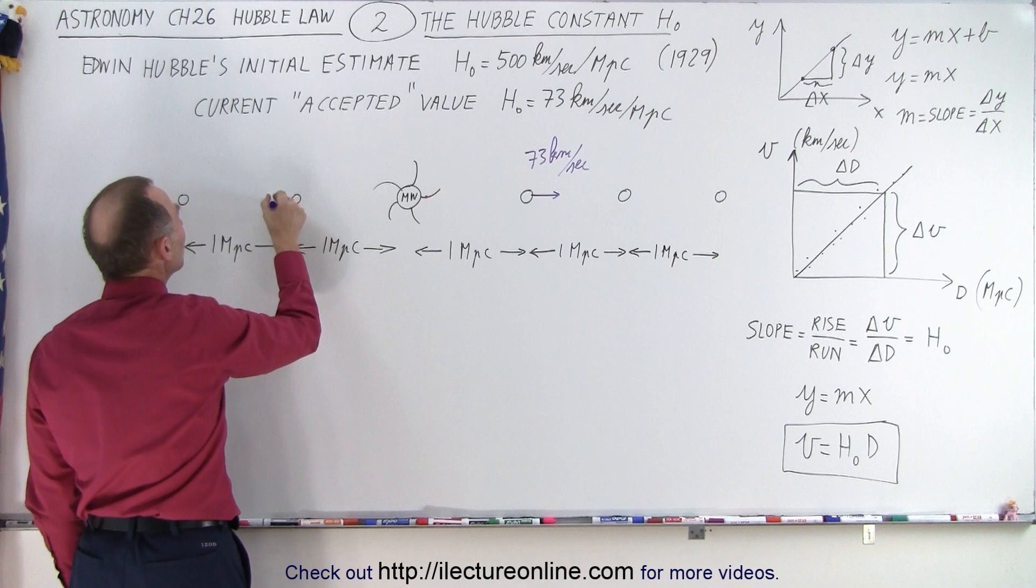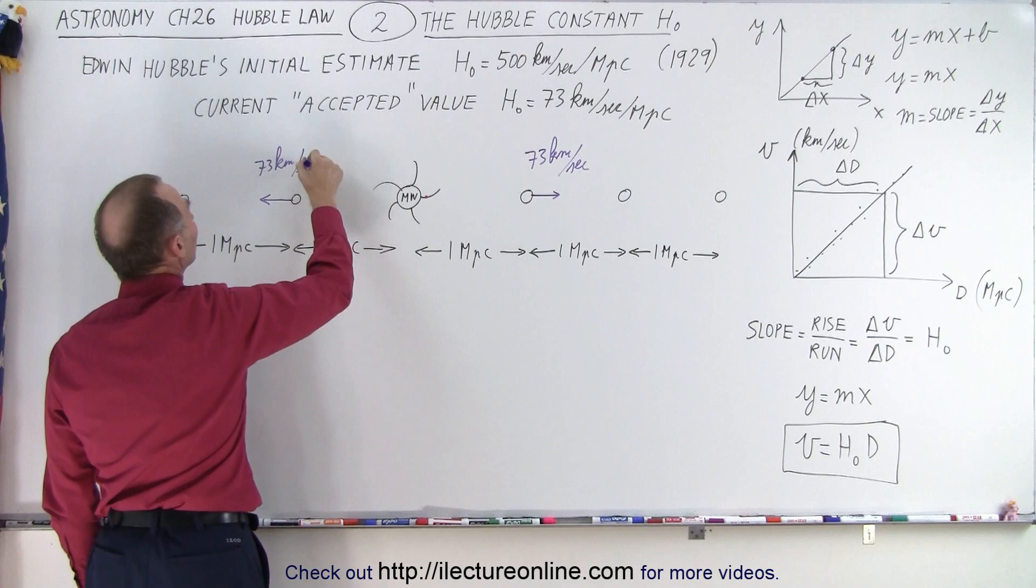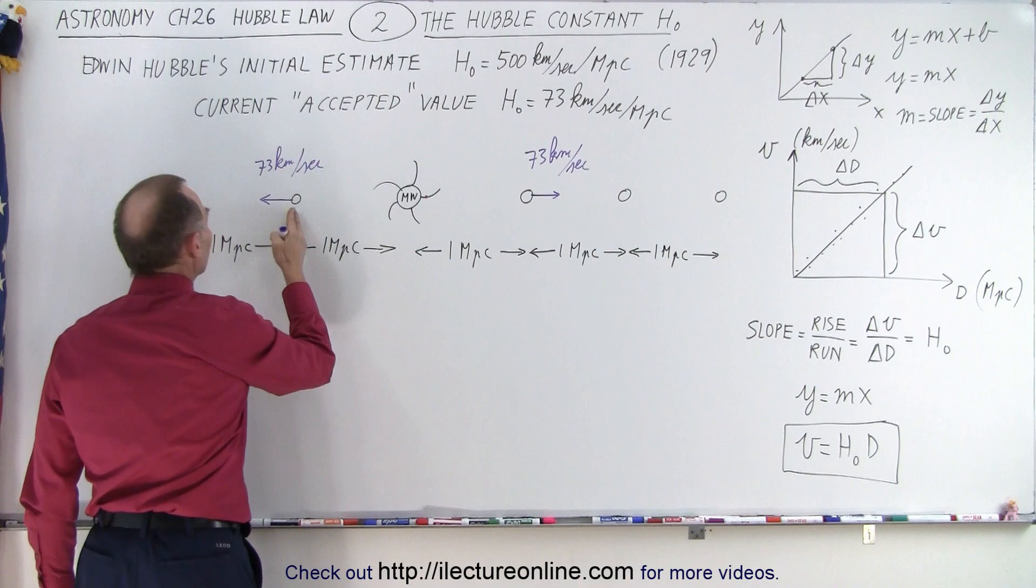Look in the opposite direction, we see another galaxy that's one megaparsec away. It will be moving away from us at a speed of 73 kilometers per second in the opposite direction. So this galaxy will be moving away from us at 73 kilometers per second and so will this galaxy.